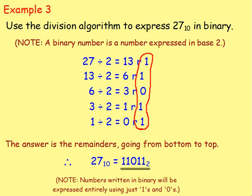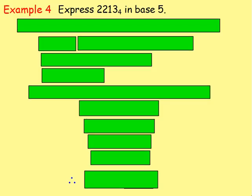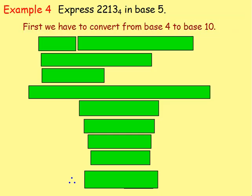A binary number is expressed entirely in just 1s and 0s, which many of you will already be aware of. Example 4: express 2213 base 4 in base 5. Here we're starting with a number written in a different base, so we must first convert it to base 10, since the division algorithm requires base 10 as the starting point.